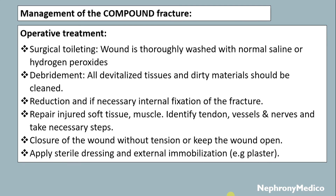Operative management: surgical toileting should be done, in which the wound is thoroughly washed with normal saline or hydrogen peroxide. Debridement — all devitalized tissues and dirty material should be cleaned. Reduction and if necessary internal fixation of the fracture should be done. Repair of injured soft tissue, muscles, tendons, vessels, and nerves will be identified and necessary steps will be taken.